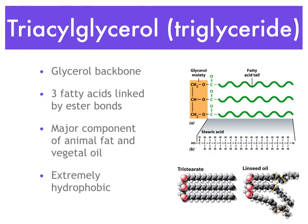Fatty acids are the basic units of fats. Most of the time, fats are found in the form of triacylglycerols, or triglycerides as you may have heard — a combination of three fatty acids linked together by their carboxylic heads with a glycerol backbone. As you can see on the picture, there is a glycerol, a sugar alcohol represented in orange, which combines with one fatty acid on each of its OH groups, giving three fatty acids in total.